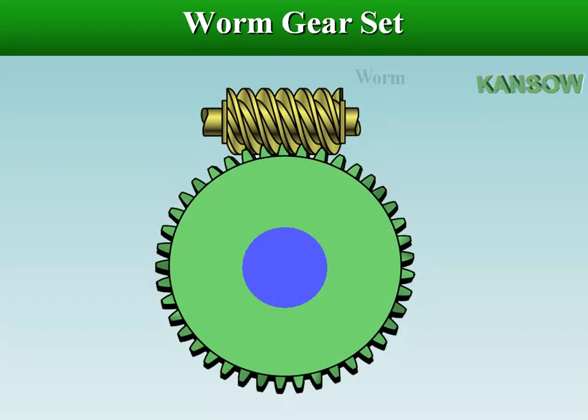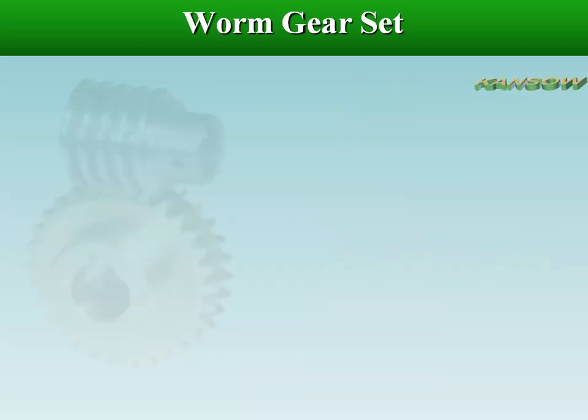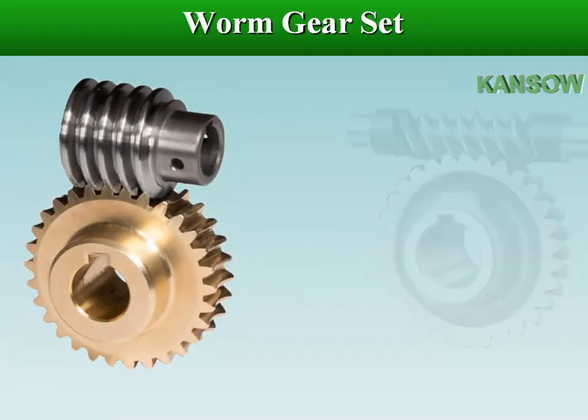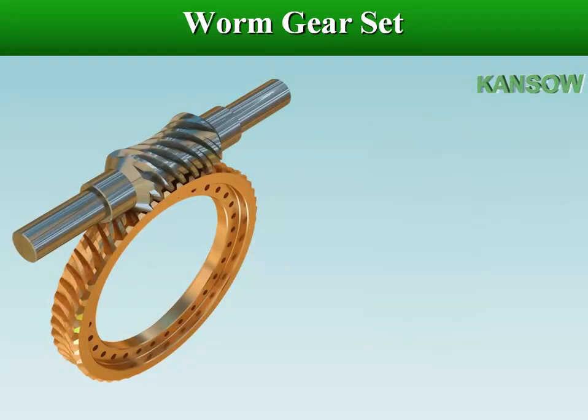A screw shape cut on a shaft is the worm, the mating gear is the worm gear or worm wheel, and together on non-intersecting shafts this is called a worm gear set.